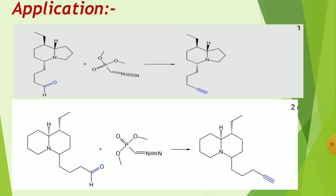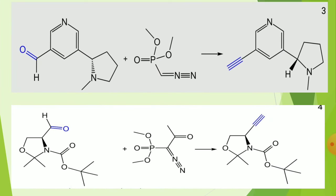In third and fourth examples, ketone molecules undergo the reaction. The final product is an alkyne from a ketone or aldehyde, with one additional carbon added, forming the triple-bonded alkyne product. The aldehyde carbon plus one carbon addition gives the total carbon count in the product.